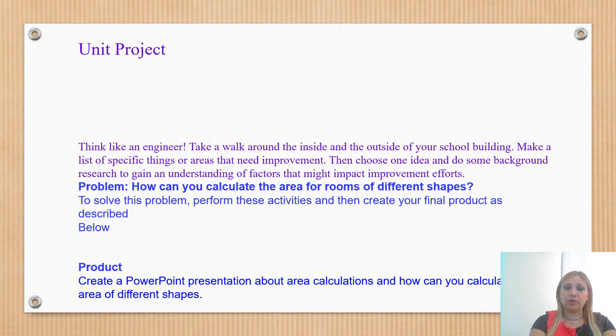This is our unit project. Our unit project is going to be thinking like an engineer. Take a walk around the inside and the outside of your school building. Make a list of specific things or areas that need improvement. Then choose one idea and do some background research to gain an understanding of factors that might impact improvement efforts.